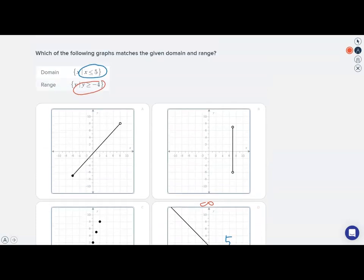So if we go back up to our original domain and range, we see the domain and range for option D match what we need. x is less than or equal to 5 for the domain, and y is greater than or equal to negative 4 for the range.